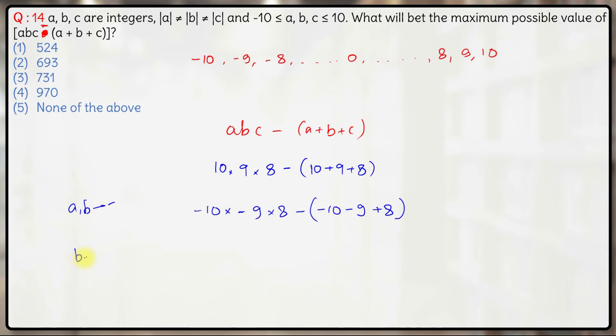What if B and C are negative? Let's consider that case also. So you have plus 10 into minus 9 into minus 8 minus of 10 minus 9 minus 8.